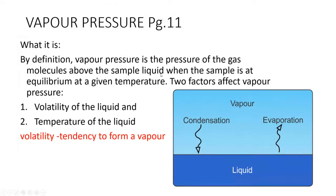By definition, vapor pressure is the pressure of the gas molecules above the sample liquid when the sample is at equilibrium at a given temperature. Basically, as the liquid heats up it vaporizes to a certain point, then stops vaporizing — at equilibrium, equal amounts are evaporating as are condensing. Two factors affect vapor pressure: first, the volatility of the liquid; second, the temperature of the liquid. Volatility is the tendency to form a vapor.